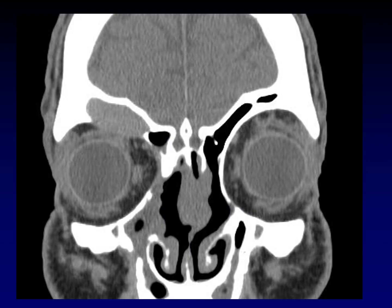A mucocele is what happens when you obstruct a sinus or a portion of the sinus and the mucus accumulates within it and expands that sinus. This is a mucocele of the frontal sinus, and you can see it pressing down on the roof of the orbit. You can imagine the mass effect that that would have — this patient will present with exophthalmos.